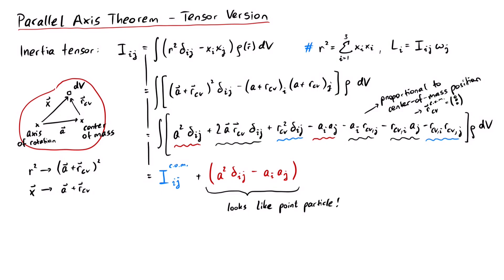So, the inertia tensor for a rotation around a random axis is given by the sum of the inertia tensor around a parallel axis through the center of mass, plus a term that looks like the inertia tensor for a point particle rotating in a distance a around the axis.